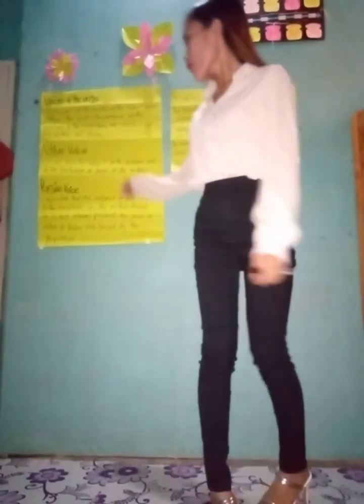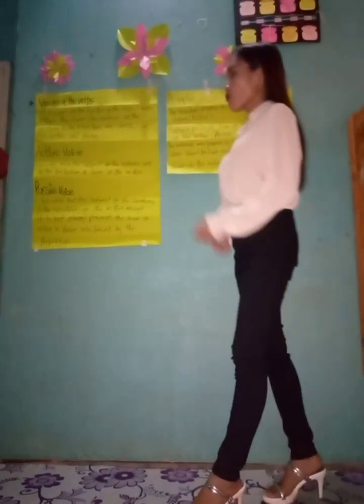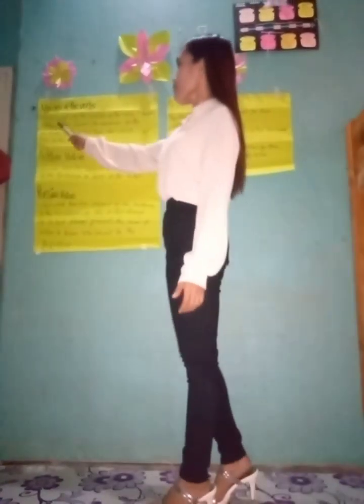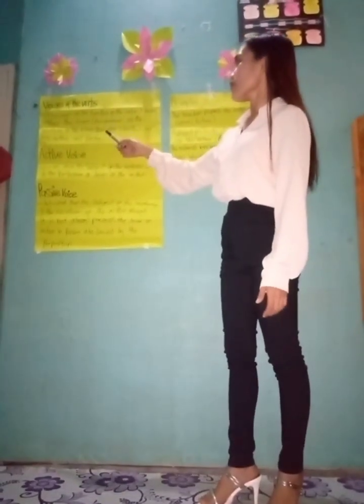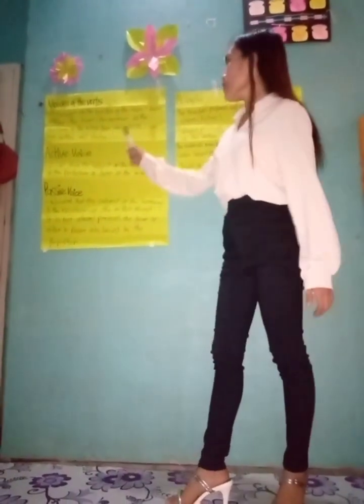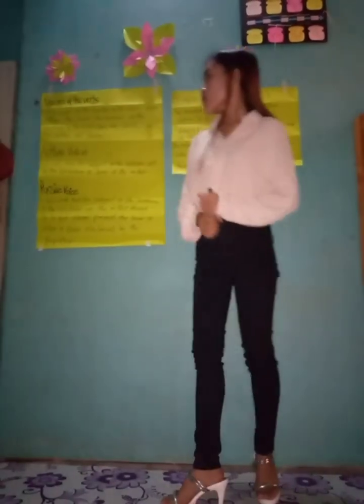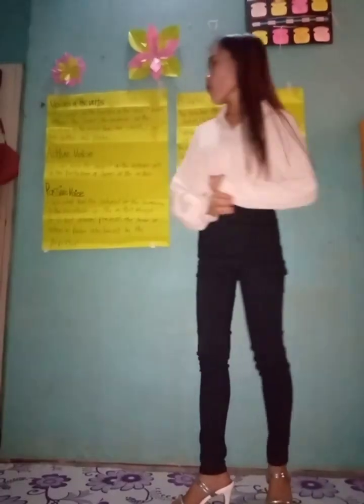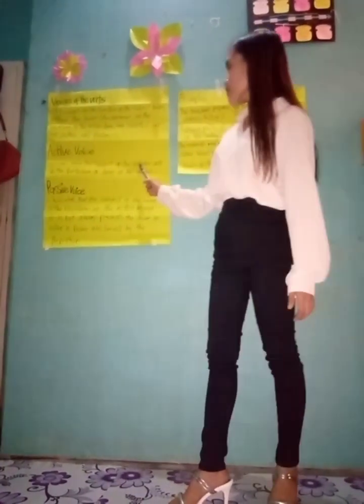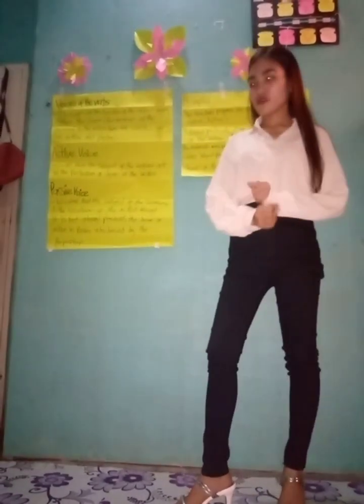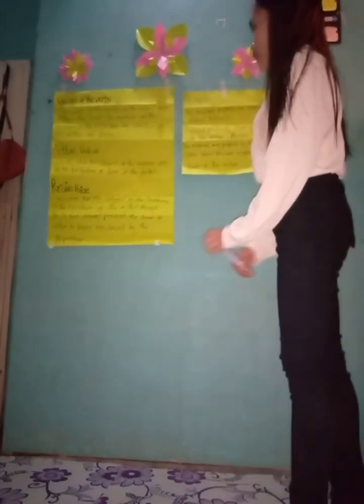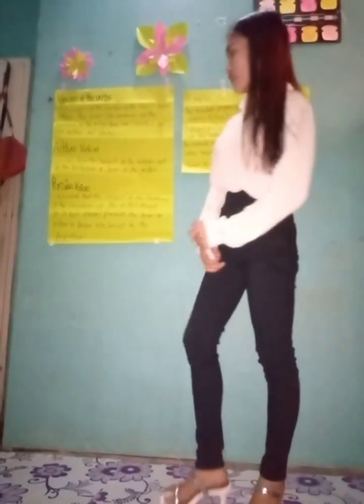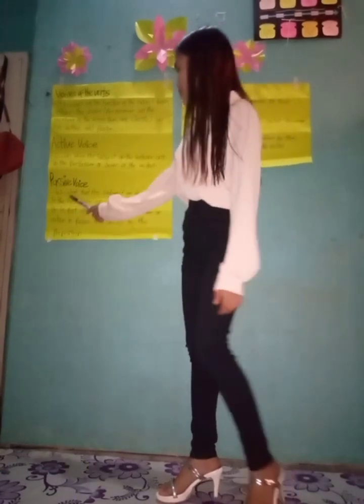Okay class, this is our new lesson: Voices of the Verb. What is the voices of the verb? It focuses on the function of the subject being either the performer or the receiver of the action. They are classified as active and passive. First is active voice — active voice occurs when the subject of the sentence acts as the performer of the action. The last one is passive voice — passive voice indicates that the subject of the sentence is the receiver of the action. The doer of the action in passive voice is introduced by a preposition.